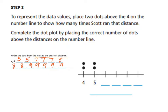Now that I have my data organized and ordered from least to greatest distance, I am now able to move on to step two. And in step two, to represent the data values, I place the dots above where they would be on the number line. So I'm going to go ahead and finish labeling my number line four, five, six, seven, eight, nine.